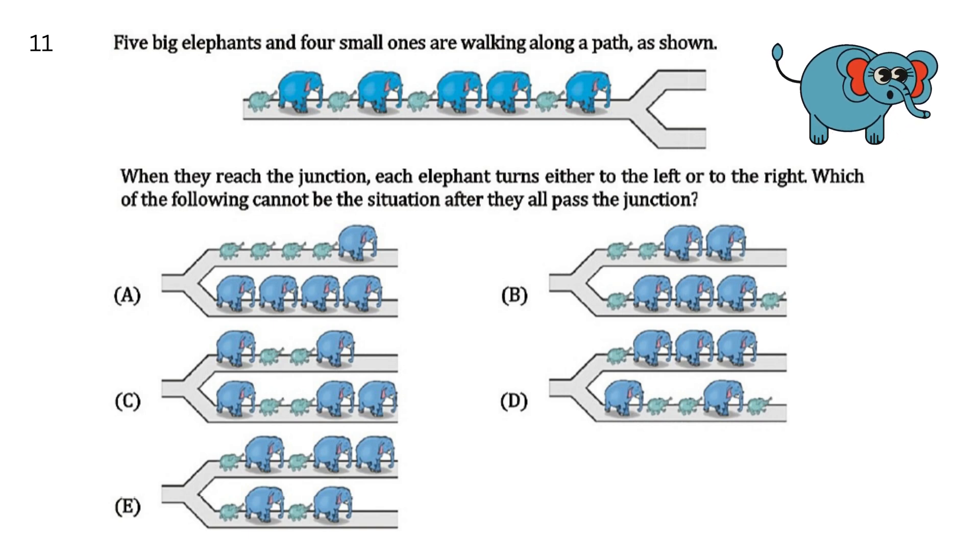To solve this, we have to look at the first three elephants and the last elephant. Last elephant चुके छोटा है, तो हर option में हमारे पास end में एक ना एक छोटा elephant होना चाहिए. So the answer is option C.